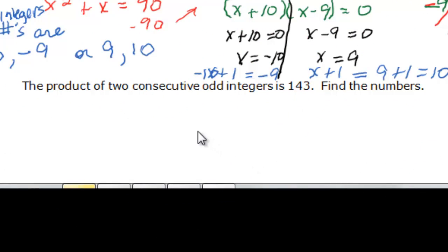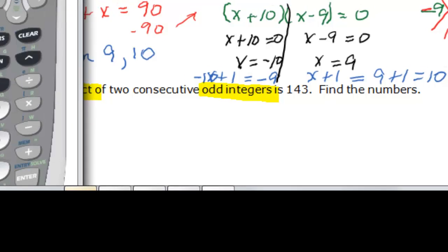Okay, so the next one says two consecutive odd integers. So that's important for us to see that we have odd integers and it's again a product of those two odd integers and then it is 143. Well I don't really know what those are right off the bat so I'm going to go back to my calculator and bring that in here.